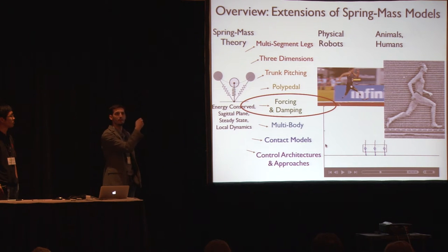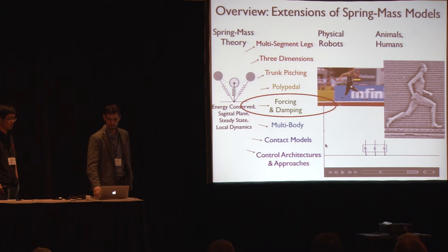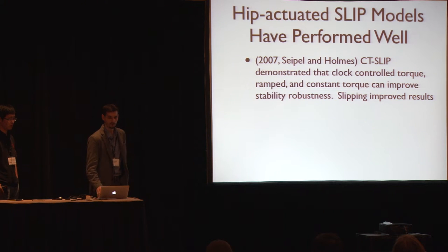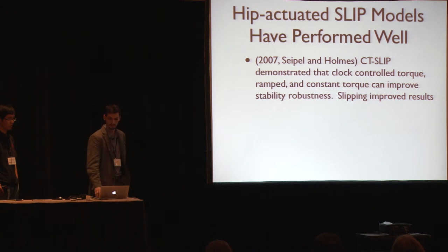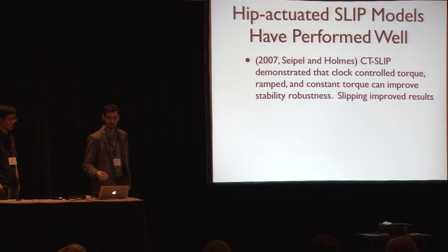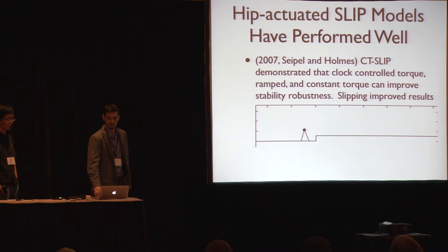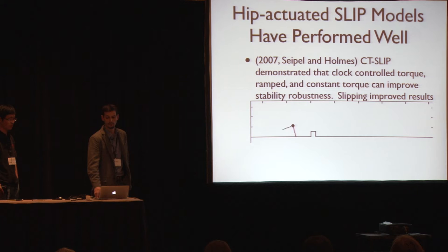This overlaps with the above-knee amputee case and the robotic hexapod case. Hip-actuated SLIP models have performed well. In previous work, the 2007 CT-SLIP model by Holmes demonstrated that clock-controlled torque, ramp torque, and constant torque can improve stability and robustness, and that slipping improves the results further. Here are a couple of quick animations — it can do steps, and it can do bumps.